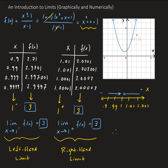So overall, the limit of our function as x approaches 1 is 3. In other words, for the overall limit to exist, the left-hand limit and right-hand limit must be equal — they have to approach the same point. This is the general idea of the limit.